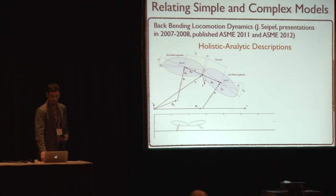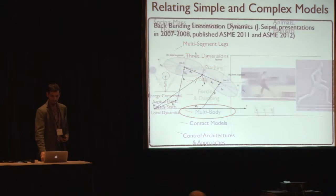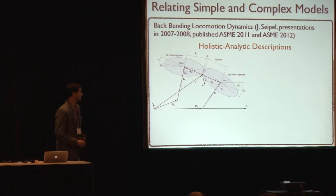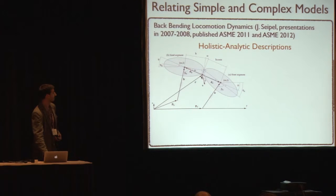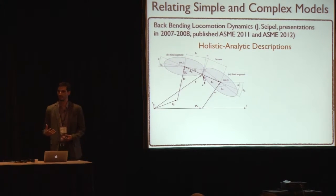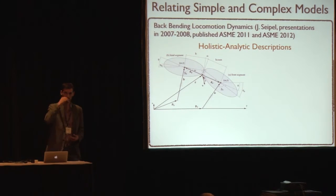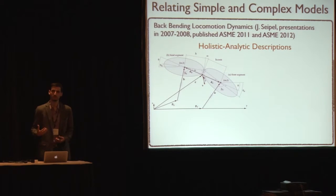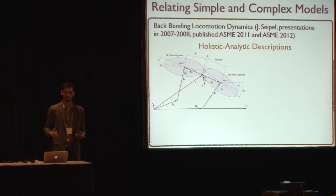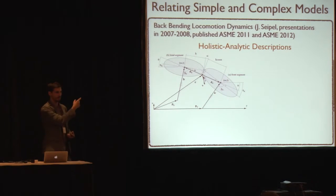Holistic analytic description — let me first describe what's going on here. In this case, you can see that there's a net center of mass around halfway between the center of masses of the two bodies. So I can define the whole-body kinematic situation, and I can make sure that when I derive the equations of motion, I'm using both the whole-body variables and then internal variables that are relative to those whole-body coordinates. For those who are interested, you can find those papers or email me.